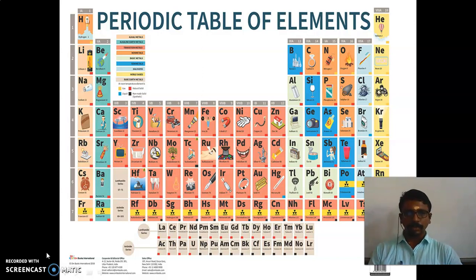So children, actually the periodic tables are classified into four blocks. How many blocks are there? There are four blocks in the periodic tables. This is S block and this one is P block and this is D block and this is F block.